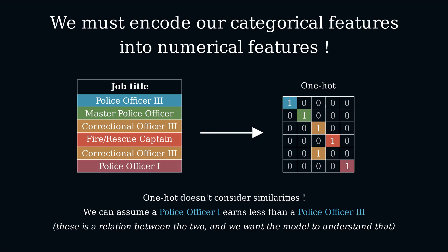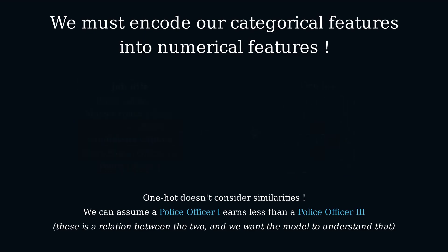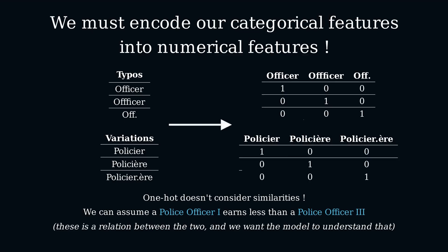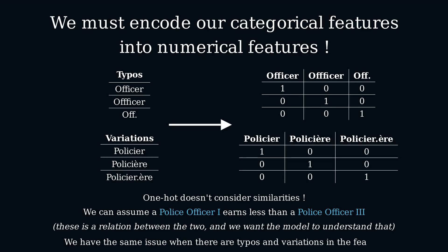We'd like the machine learning model to understand this relation. A similar issue arises when the feature is not curated. In this case, we could see typos and variations in the data. One-hot would nonetheless encode these dirty occurrences independently, which is a problem. So, how can we account for these similarities directly in the encoders we use?